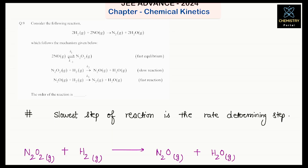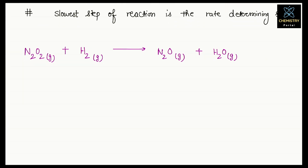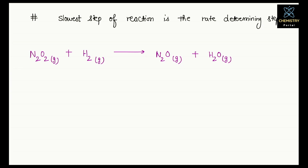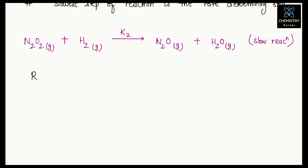For this slow reaction, the rate constant is K₂. So we can write the rate law: R = K₂ × [N₂O₂] × [H₂], since the reactants here are N₂O₂ and H₂.